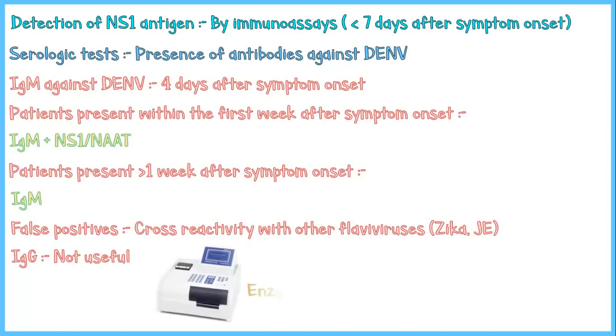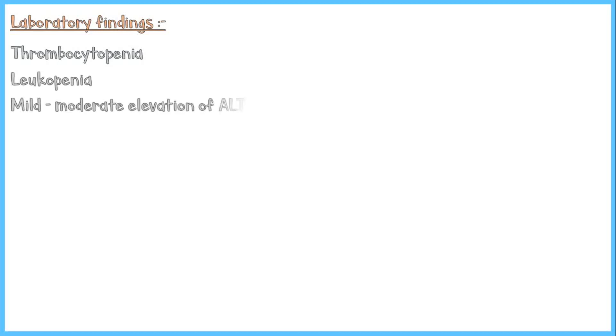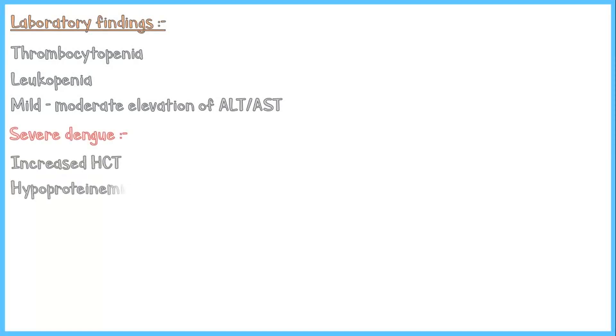Enzyme-linked immunosorbent assay (ELISA) is the technique used to detect antibodies against dengue virus. Common laboratory findings of dengue infection include thrombocytopenia, leukopenia, and mild to moderate increase in serum transaminases. In severe infection, the patient may have increased hematocrit, hypoproteinemia, prolonged PT and APTT, and decreased fibrinogen levels.